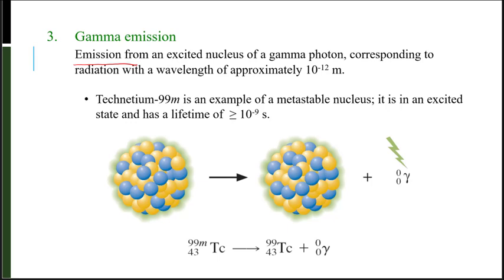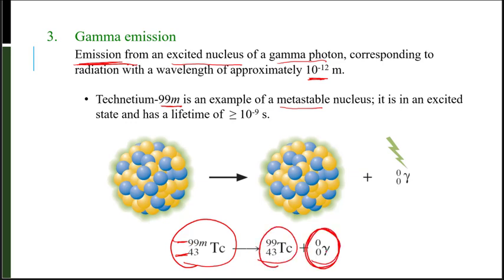We've looked at alpha emission and beta emission. Now let's look at gamma emission. Gamma emission is when we have emission from an excited nucleus of a gamma photon, and it corresponds to radiation with a wavelength of approximately 10 to the negative 12 meters. Technetium-99m is an example of a metastable nucleus — it is in an excited state and has a lifetime of about 10 to the negative 9 seconds. Notice that the mass and atomic number do not change, but energy is released as a gamma ray. Gamma radiation consists of the shortest wavelength of electromagnetic waves, even shorter than x-rays, and has the highest energy of any form of electromagnetic radiation.